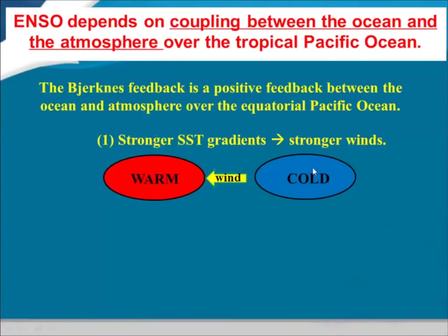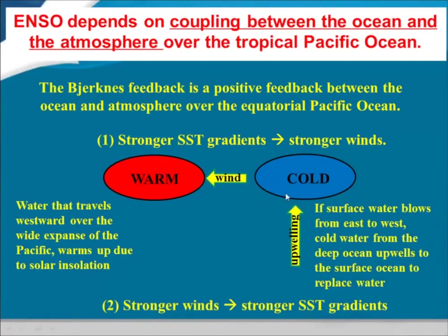As a result of a stronger SST gradient — the cold becoming colder, the warm becoming warmer — you get stronger winds connecting the two regions. The warm area has more rising motion; cold areas have more sinking motion. As a result of continuity, you have stronger winds blowing between the two regions. And because you have stronger winds, you actually reinforce the initial stronger SST gradient. This is our positive feedback.